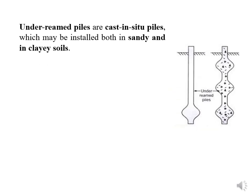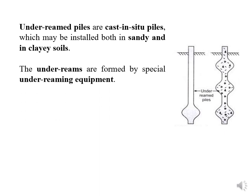Underreamed piles are definitely cast in-situ piles. To construct them, we have to make a borehole at the site. At the required depth, we insert the underreaming tool. At the required depth, we make the borehole. The underreams are formed by special underreaming equipment, and this can be carried out in both sand and clay soil.